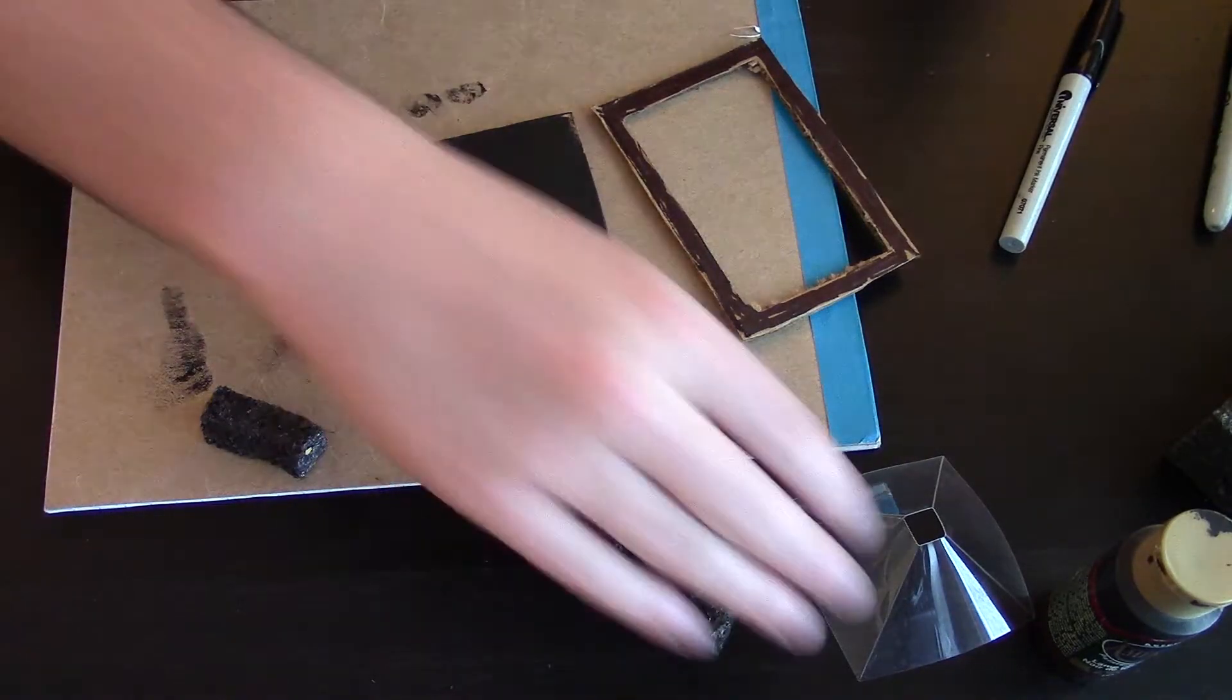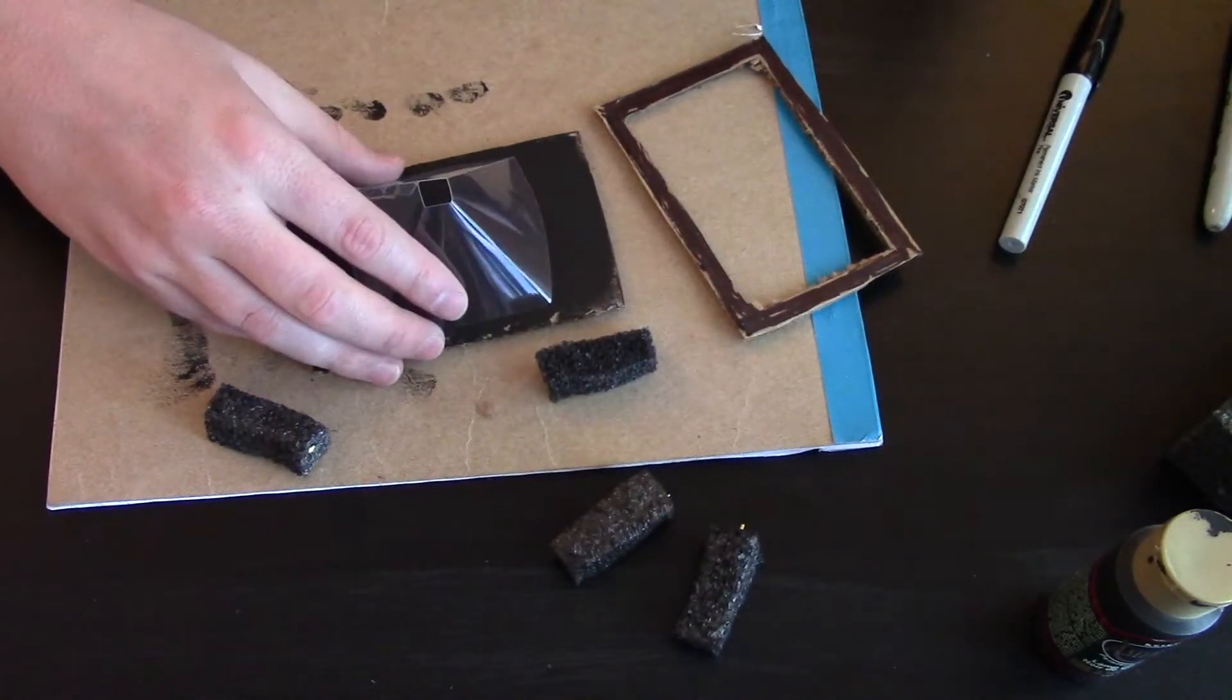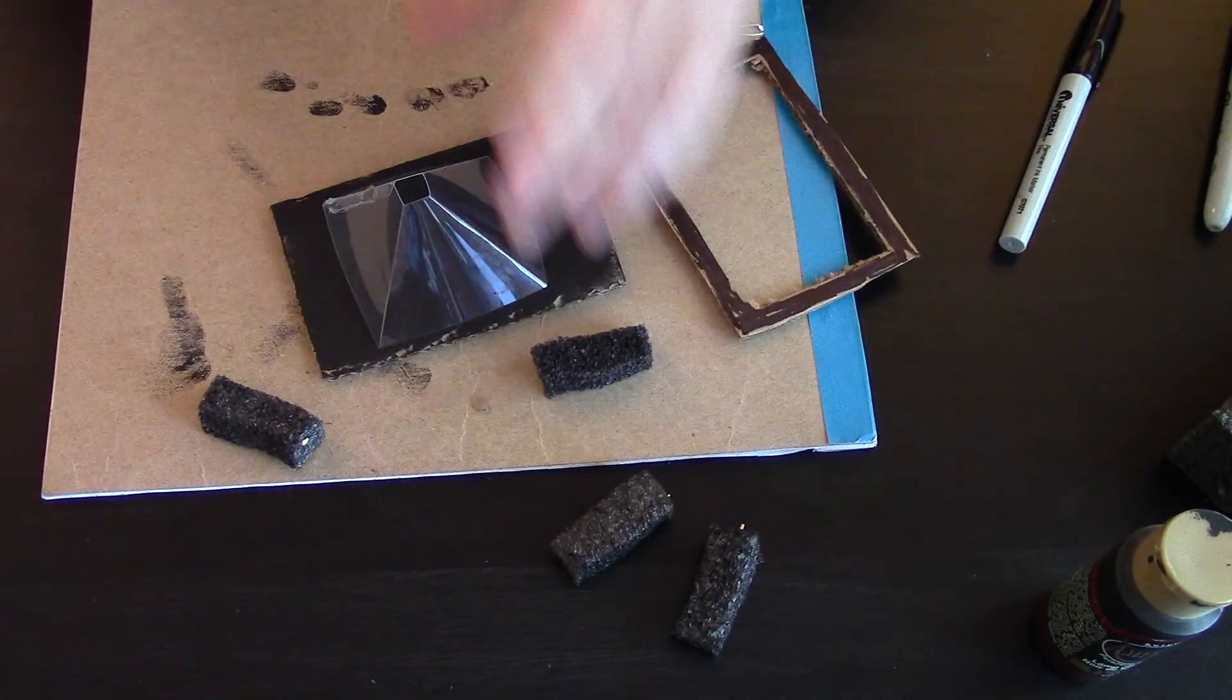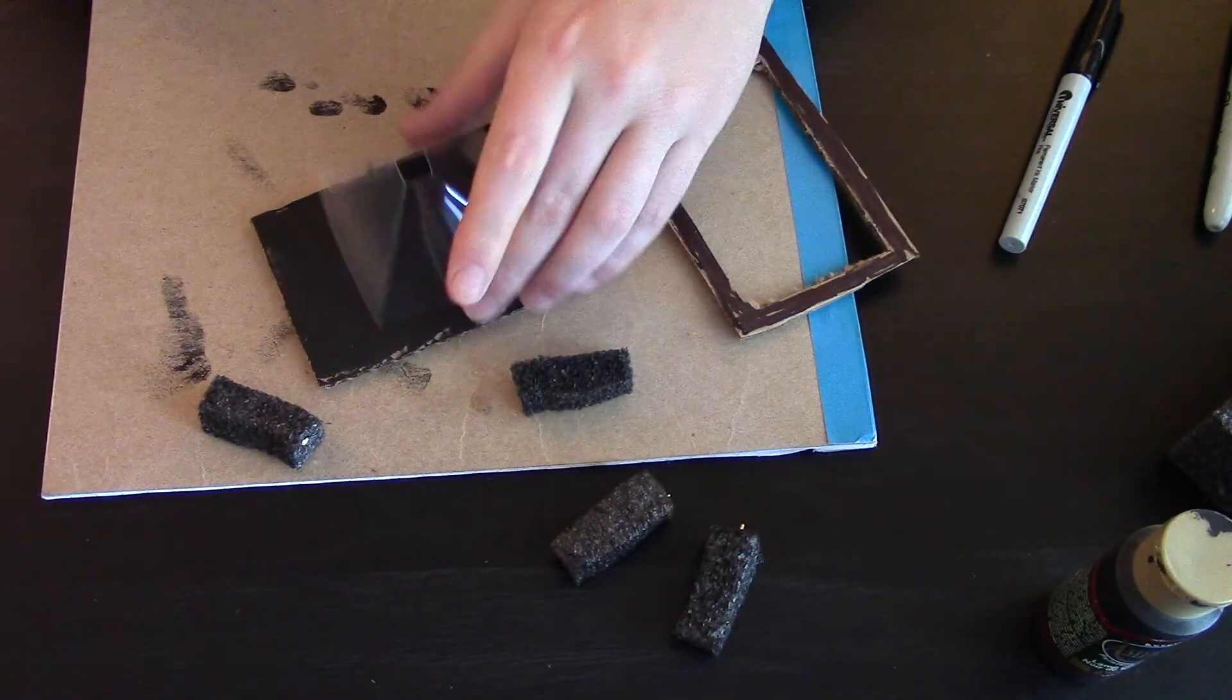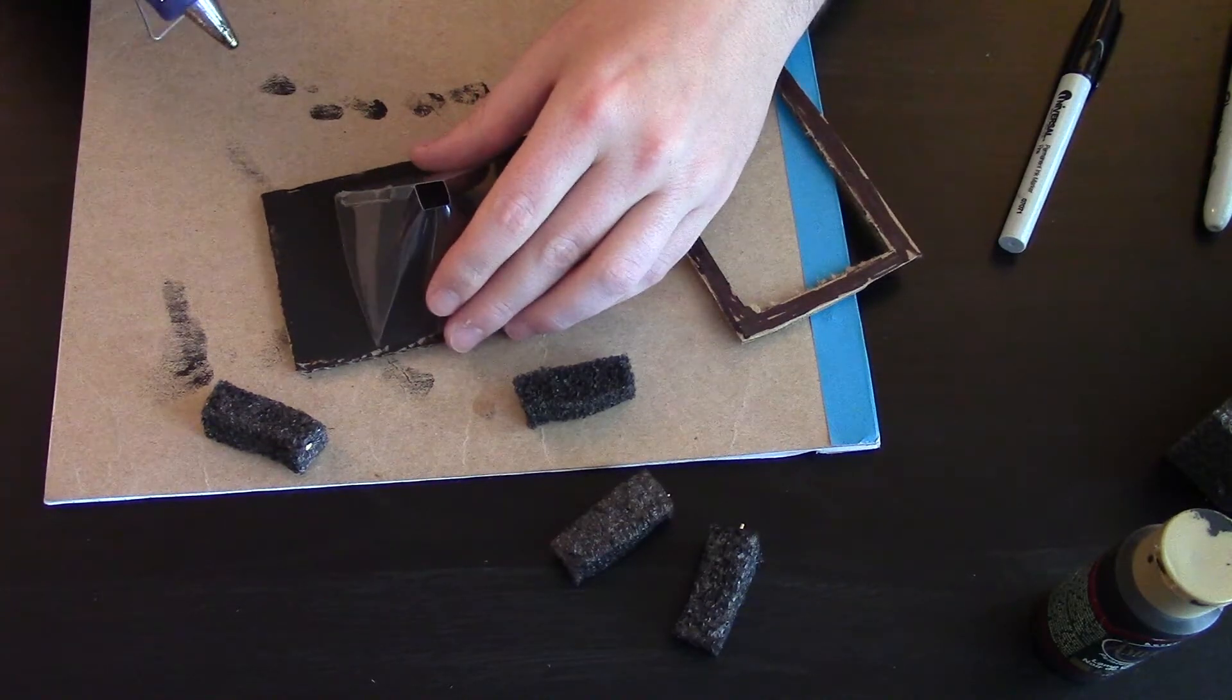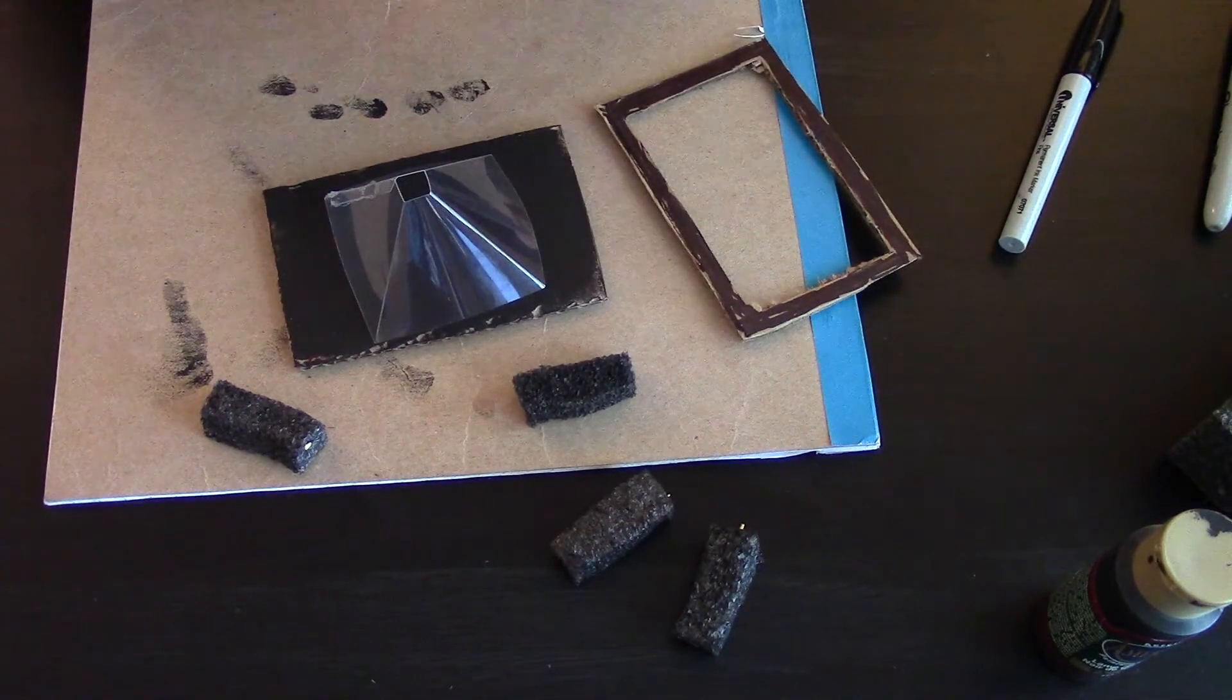Now it's time for some hot glue. First of all we're going to put the pyramid in the center like so and try to make it as stable as possible. You may want to clean the inside before doing this because once you do this you really can't clean the inside. And we're going to go ahead and just scoop some glue on here.